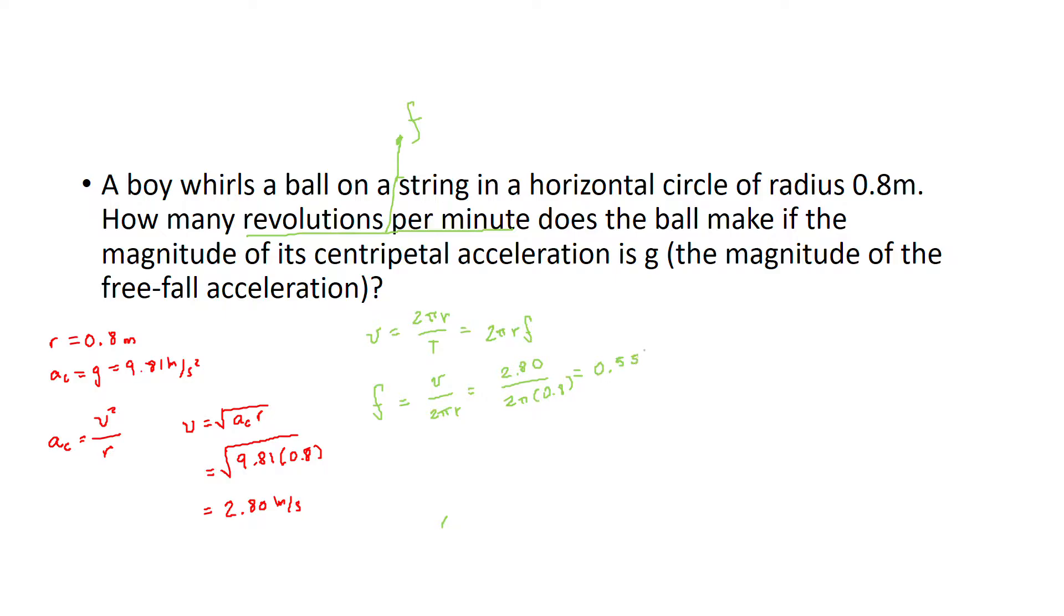That's revolutions per second, sorry. Now we want to know that in revolutions per minute, so we just need to transform it. 0.55 revolutions per second, and we know that 60 seconds equals one minute.